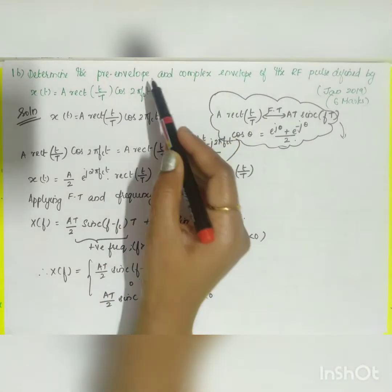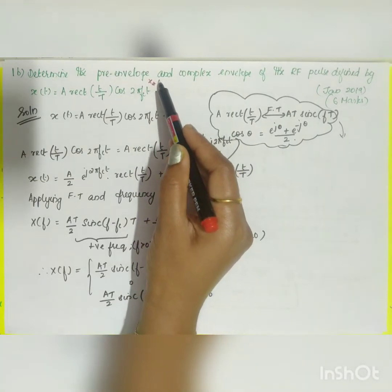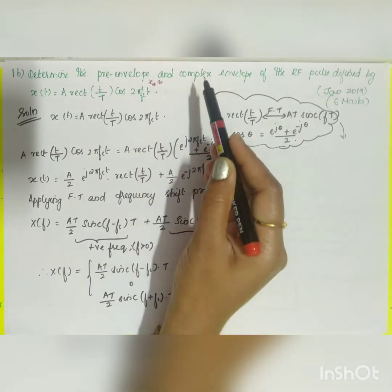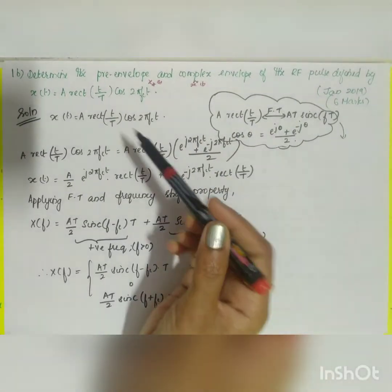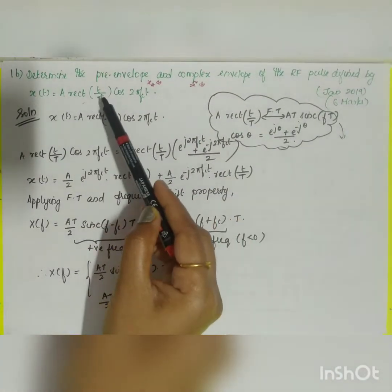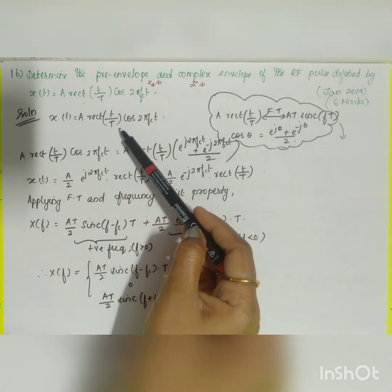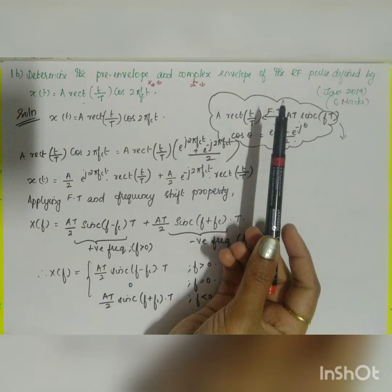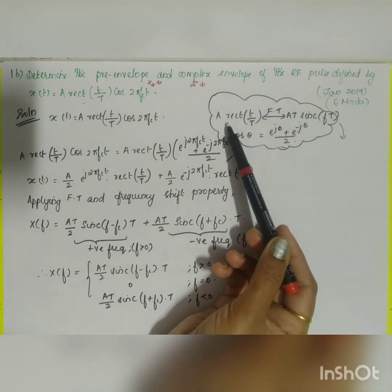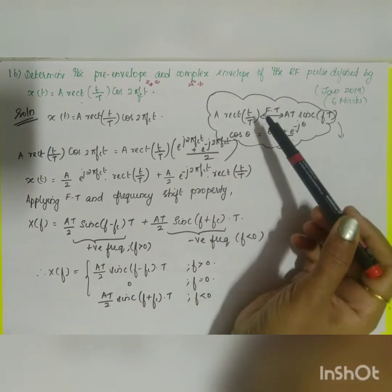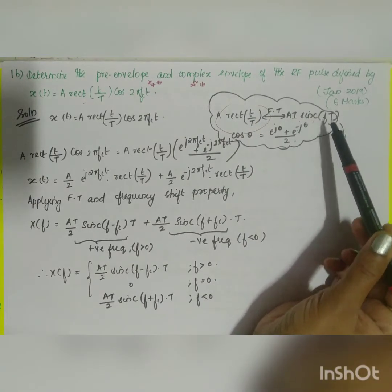The pre-envelope is denoted as x⁺(t) and the complex envelope as x̃(t). For the solution, the given signal is a rectangular pulse: x(t) = A·rect(t/T)·cos(2π·fc·t). The Fourier transform of the rectangular pulse is equal to A·T·sinc(fT).